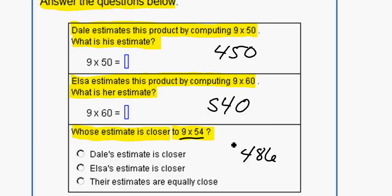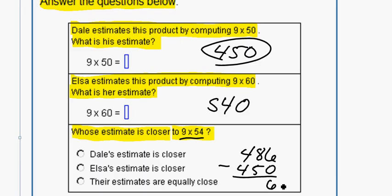So then we can check Dale's estimate of 450. So 486 minus 450 gives us 6 minus 0 is 6, 8 minus 5 is 3, 4 minus 4 is 0, so a difference of 36.